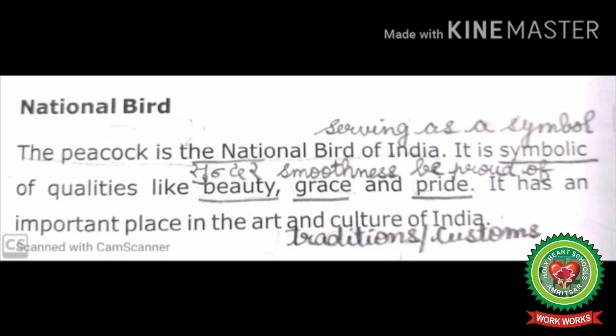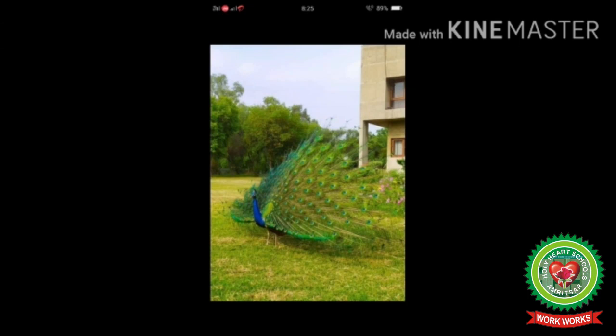Symbolic means serving as a symbol, beauty means sundar, grace means smoothness, pride means to be proud. It has an important place in the art and culture of India — culture means traditions or customs. The peacock is called the national bird of India because of its qualities like beauty, grace, and pride. It is a very beautiful and colorful bird, so it has an important place in the art and culture of India.